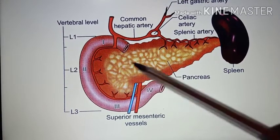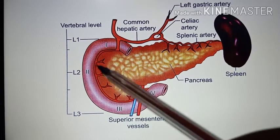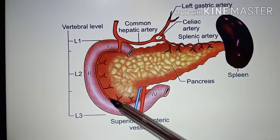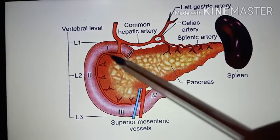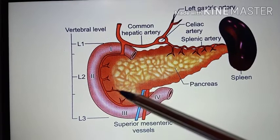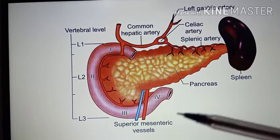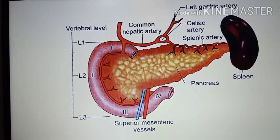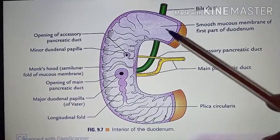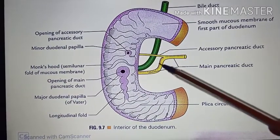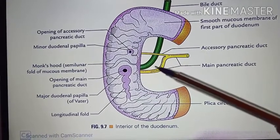In this picture you can see the duodenum and the pancreas. This is the second part of the duodenum and this is the medial part. Medially, you have the head of the pancreas, then the anastomosis between the superior and inferior pancreaticoduodenal arteries. In the medial relation, you will also see the bile duct, the main pancreatic duct, and the accessory pancreatic duct.